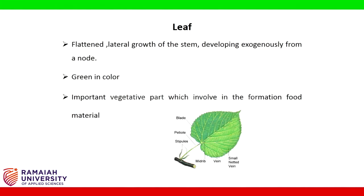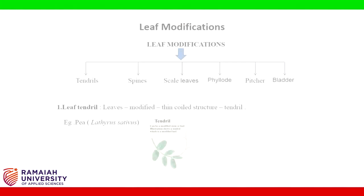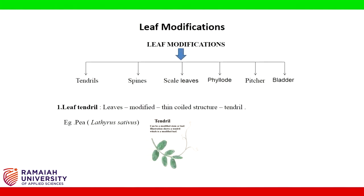Leaf: a leaf is a flattened lateral growth of the stem developing exogenously from a node. They are green in color and are the important vegetative part involved in the formation of food material. The various leaf modifications are: tendrils, spines, scale leaves, phyllode, pitcher, and bladder.